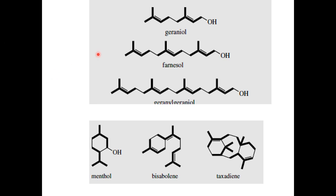These are examples of acyclic terpenoids and cyclic terpenes. An example of an acyclic monoterpene is geraniol, formed from two isoprene units. It consists of ten carbons with two isoprene units attached by head-to-tail attachment. It is the precursor of all other monoterpenes. Farnesol consists of 15 carbons and is derived from three isoprene units, also formed by head-to-tail attachment.